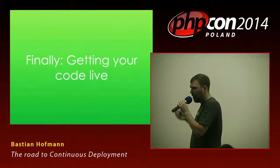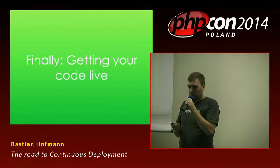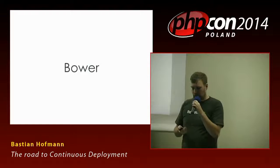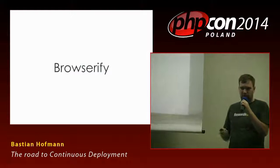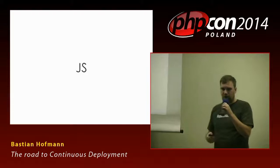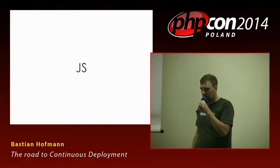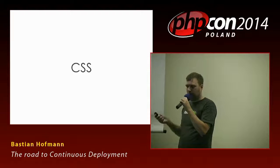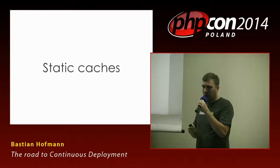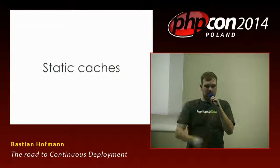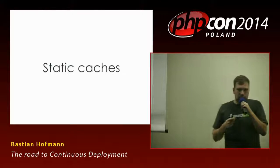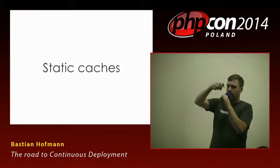When thinking about how to get code on servers, there are usually two steps. First, a build process: running Composer, maybe for JavaScript running Bower, NPM, or Browserify; minifying JavaScript, compiling CoffeeScript, minifying CSS, creating sprite maps, minifying HTML templates, building static caches, and compiling optimized code — for example Symfony has a cache compilation step. You do this before every deployment to make your code ready to be deployed to your servers.